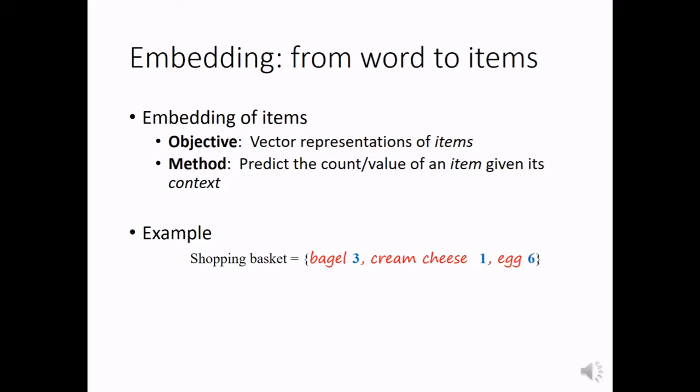And the idea of word embedding carries to item embedding. The objective is the same here, to find vector representations of items. And the method is similar, to predict the count or value of an item given its context. In this example, we have a shopping basket with bagel, cream cheese, and egg, and their counts. We can take out cream cheese and use vector representations of bagel and egg to predict the count of the cream cheese.